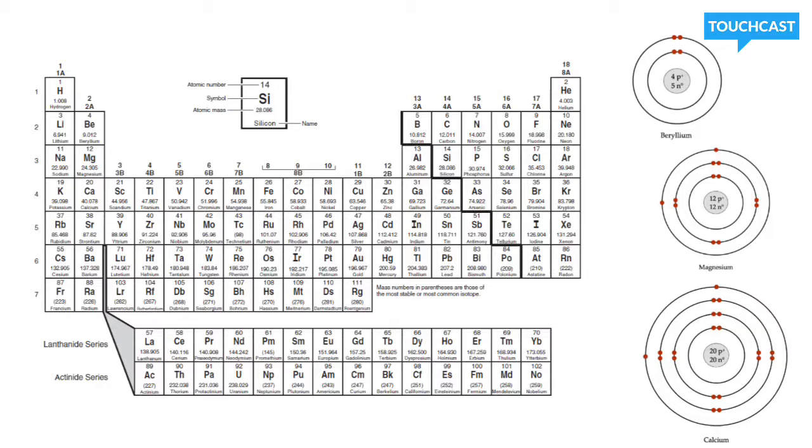Alright, let's use these models to demonstrate how the period determines the number of energy levels. If you look here on period 2, we have beryllium, and it has two energy levels.